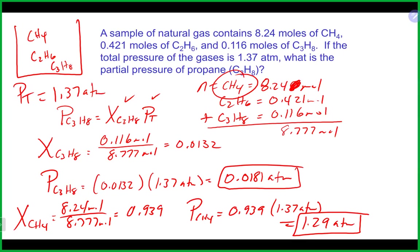You would only want to use the mole fraction approach in a situation where you don't have temperature or volume — not enough information to use the ideal gas law — but you have the moles of all gases and at least one piece of pressure information, either total pressure or a partial pressure. Otherwise, use the ideal gas law. These are two ways to calculate partial pressures.